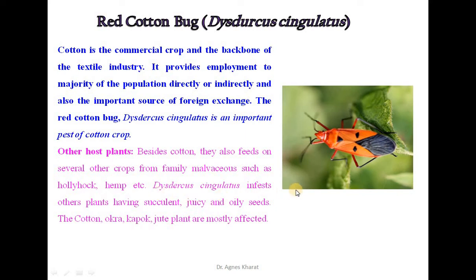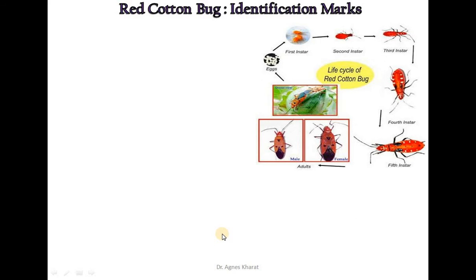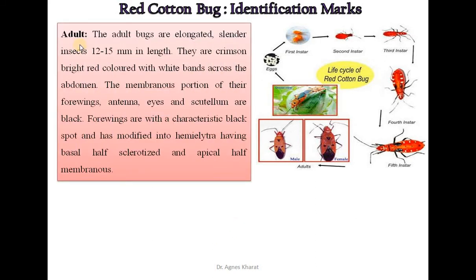Dysdercus singulatus infests other plants having succulent, juicy and oily seeds. Cotton, okra, kapok and jute plants are mostly affected. For identification, the adult bugs are elongated, slender insects 12-15 mm in length, crimson bright red colored with white bands across the abdomen. The membranous portion of fore wings, antenna, eyes and scutellum are black. The fore wings have a characteristic black spot and are modified into hemi-elytra, having basal half sclerotized and apical half membranous.